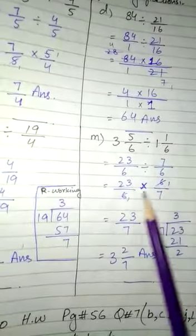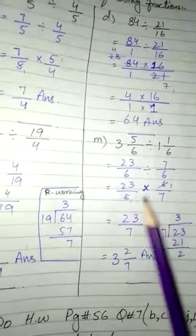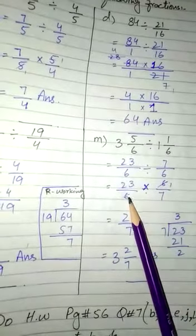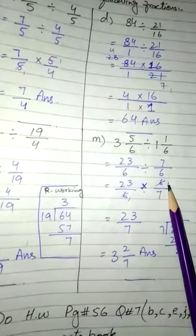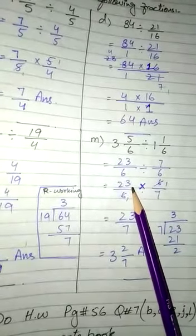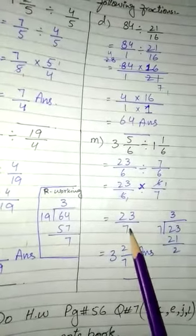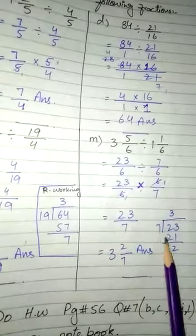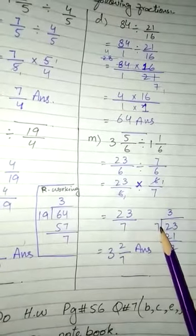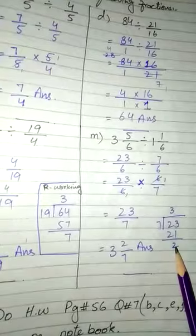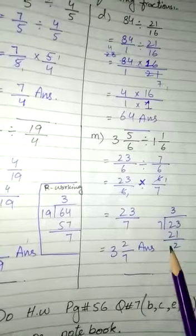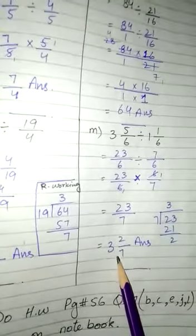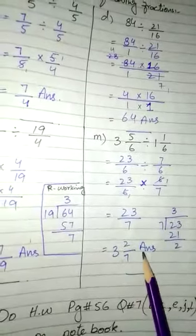23/6 multiplied by 6/7. Here we have 6 in both numerator and denominator - they cancel out. Now we have 23/7. Let's convert to mixed number: 7 times 3 is 21. 23 minus 21 equals 2, which is our remainder. So our answer is 3 2/7. This is our answer.